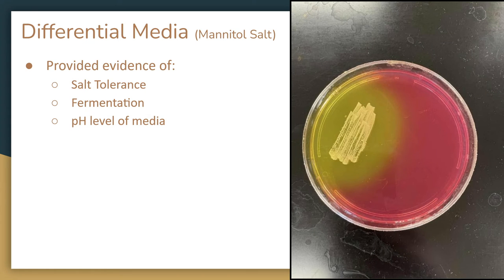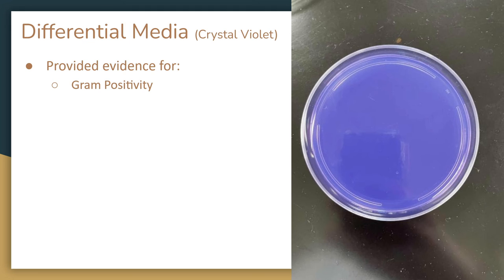Then, I decided to run several differential media plates. I won't be going over all seven that I did because only two really stuck out as important. First, the Mannitol salt plate — this tested for salt tolerance as well as fermentation and pH change on the media. As seen in the image to the right, the pH indicator was set off, meaning fermentation was taking place, and the growth indicates a tolerance to salt. This significantly narrowed my search. I then used a crystal violet plate to confirm my gram-positivity suspicions, as it acts as a gram-positive inhibitor, meaning the lack of growth was very encouraging to my original hypothesis.